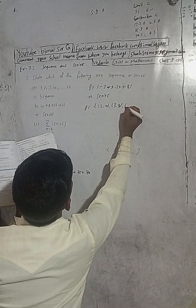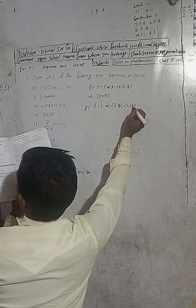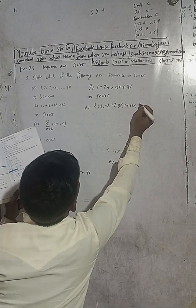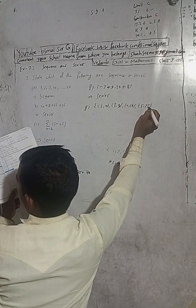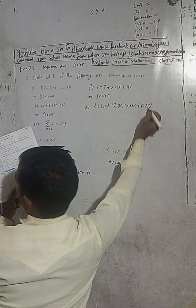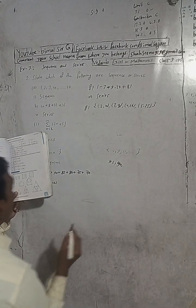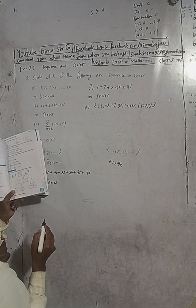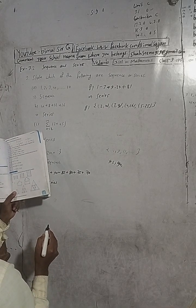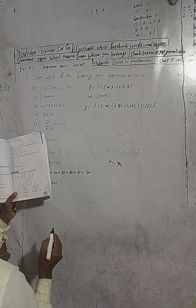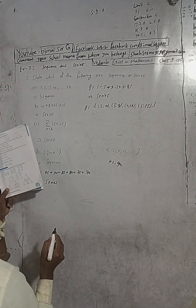Four, sixteen, five, twenty-five — two, four; two, four; three, nine; four, sixteen; five, twenty-five — four, four, five, five.